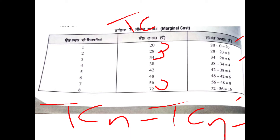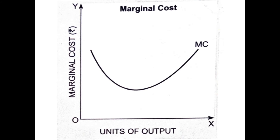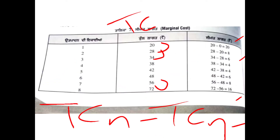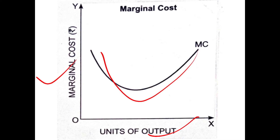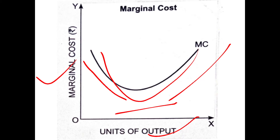Looking at the marginal cost diagram — the shape of the curve with units of output on the axis — marginal cost values are: 8, 4, 4, 4, which is constant. Then marginal cost reaches a minimum point, around 1 or 2, and the shape continues.